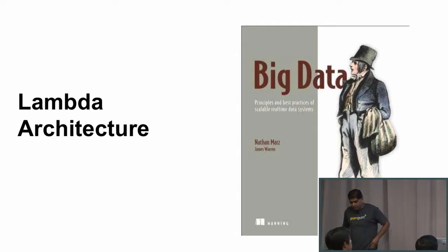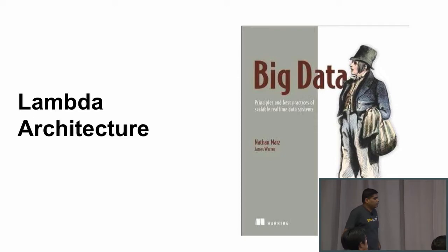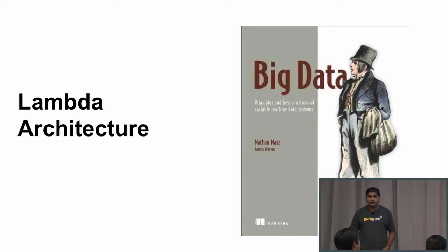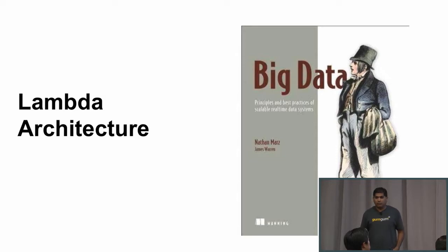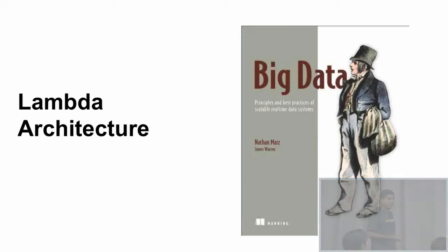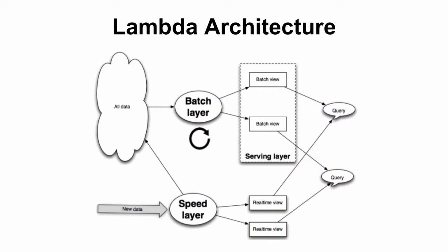Lambda architecture is a concept proposed by a guy called Nathan Marz — a very famous guy who came up with the Apache Storm framework. He wrote a book called Big Data, and a lot of the concepts I'm going to talk about today are mentioned in that book. Lambda architecture is an architectural framework to build robust, scalable, fault-tolerant data systems. It basically proposes that you divide your data into three layers: the batch layer, the speed layer, and the serving layer.